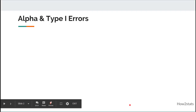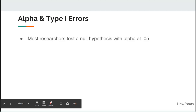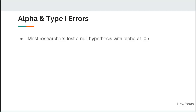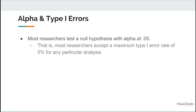Let's get started with defining alpha and type 1 errors. Most researchers test a null hypothesis with alpha at 0.05 — we're pretty much stuck with that in practice. 0.05 is the demarcation criterion for statistical significance, which implies that most researchers accept a maximum type 1 error rate of 5% for any particular analysis.